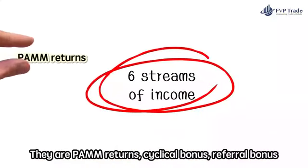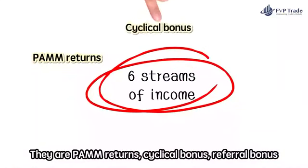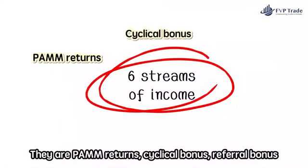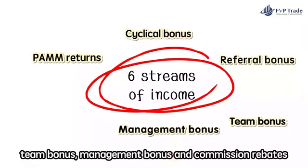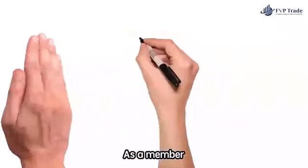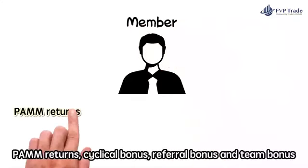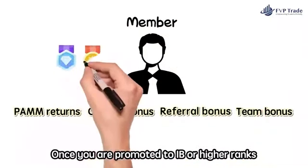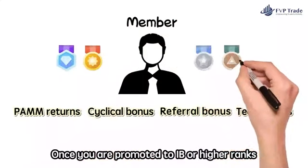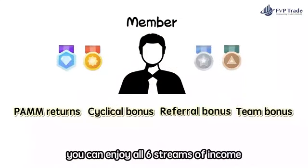The 6 streams of income are PAM returns, Cyclical bonus, Referral bonus, Team bonus, Management bonus, and Commission rebates. As a member, you get to enjoy PAM returns, Cyclical bonus, Referral bonus, and Team bonus. Once you are promoted to IB or higher ranks, you can enjoy all 6 streams of income.